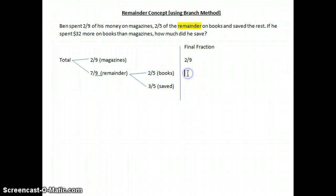Simply, what you have to do is multiply 7 out of 9, this fraction, multiply with 2/5. 7 out of 9 multiply with 2/5, and I get it to be 14 out of 45. This is the amount that spends on books.